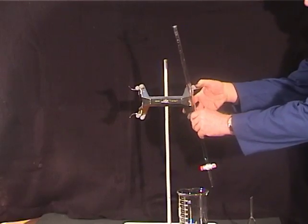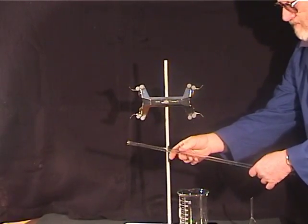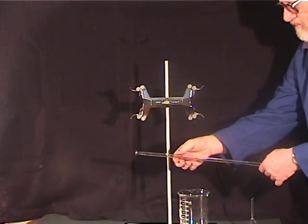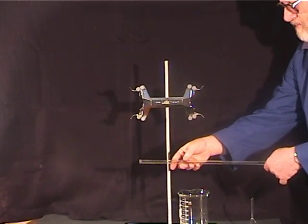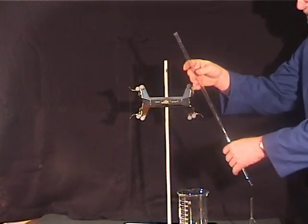To rinse the burette with the titrant, hold the tube in the near horizontal position and rotate it to rinse as much of the inner sides as possible. Then discard the rinse.